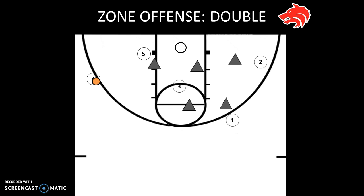Double is a set play run against a zone defense. It relies on quick movement of the ball, getting it into the middle, and then knowing what to do with the ball depending on how the defense tries to play it. It can be very effective if run correctly against the zone defense.